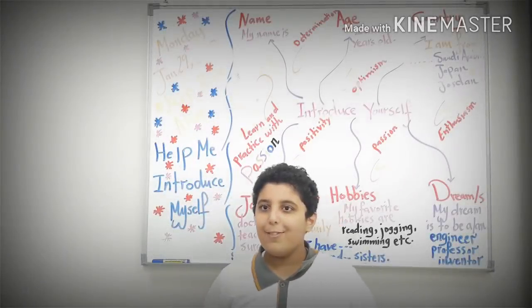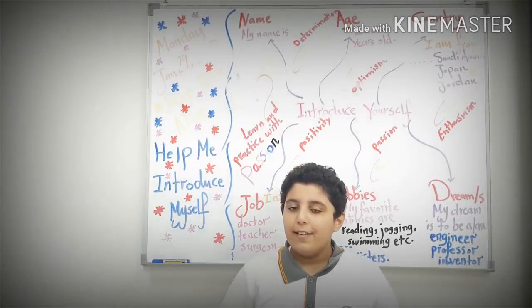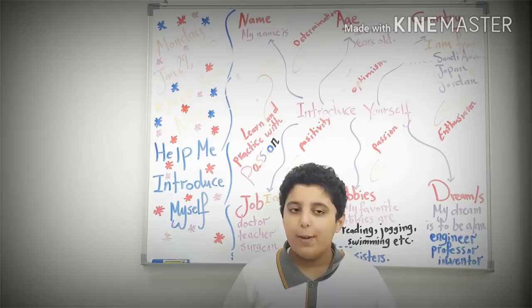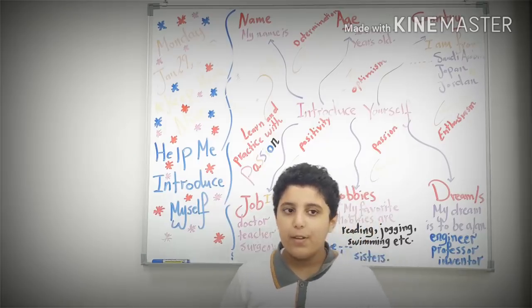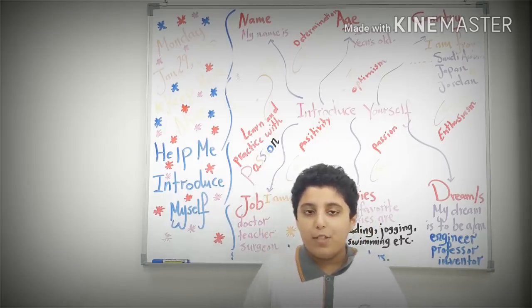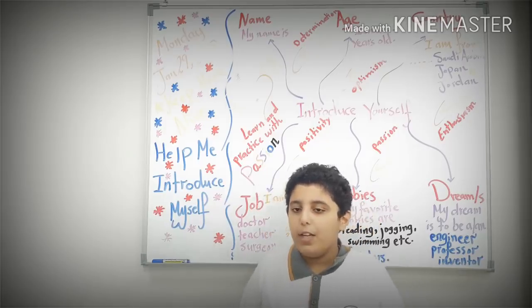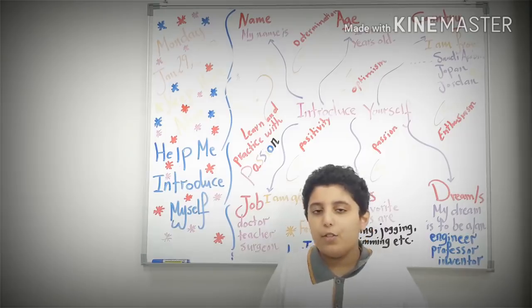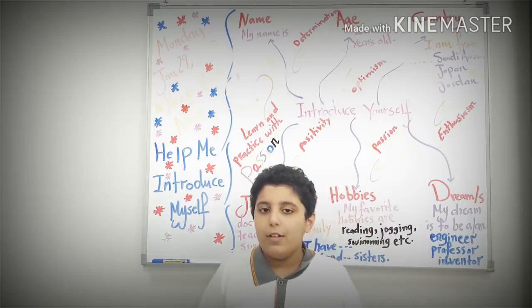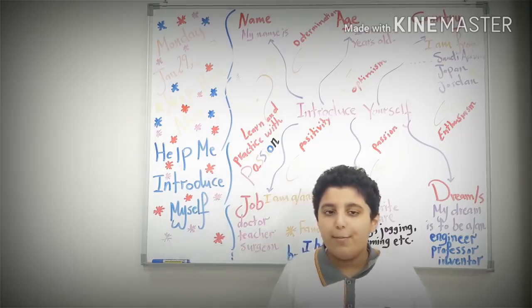Hi. Hi, how are you, teacher? Fine, thanks. Could you please tell us something about yourself? Okay, sure. My name is Adrachman Al-Amri. I'm 11 years old. I'm from Saudi Arabia.